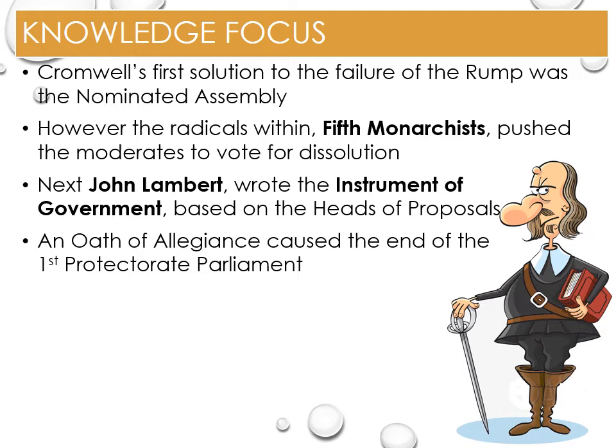However, Cromwell faced resentment from the members of Parliament who had not forgotten his dissolution of the Rump. He attempted to force the members to take an oath of allegiance to the Lord Protector, which most refused to do. In January 1655, Cromwell dissolved the first Protectorate Parliament.